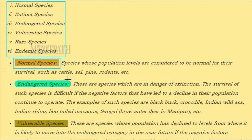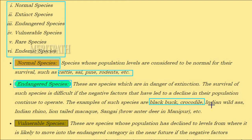Normal species are those whose population levels are considered normal for survival, such as cattle, sal, pine, and rodents. Endangered species are those in danger of extinction — survival is difficult if the negative factors causing population decline continue to operate. Examples include the black buck, crocodile, Indian wild ass, Indian rhino, lion-tailed macaque, and sangai (the brow-antlered deer of Manipur).